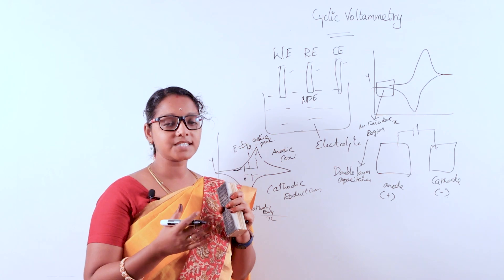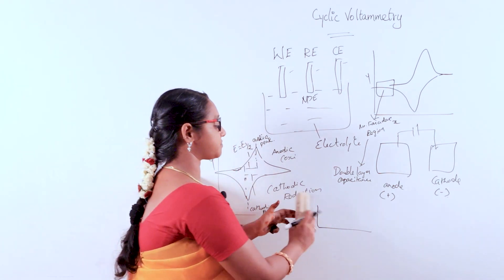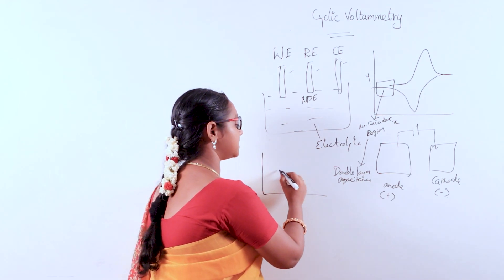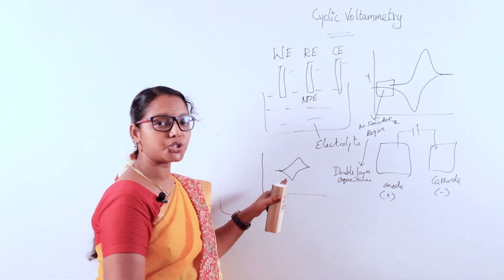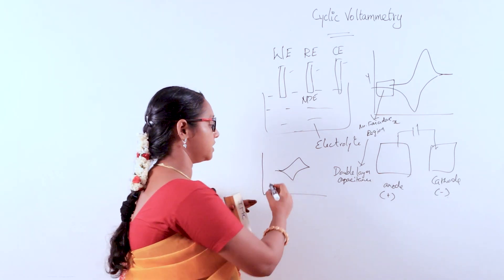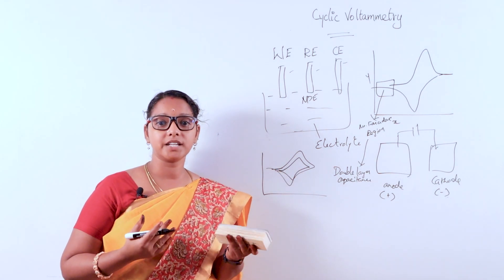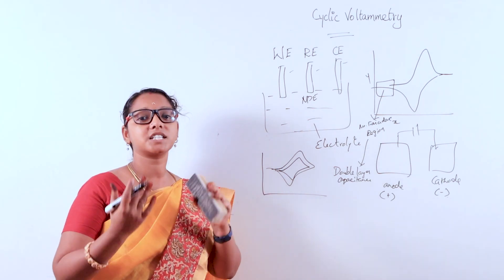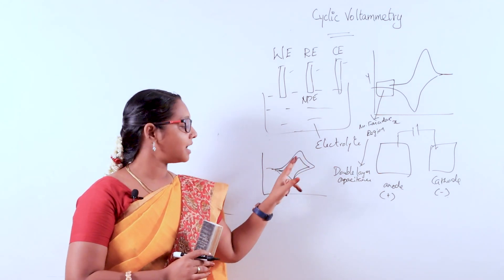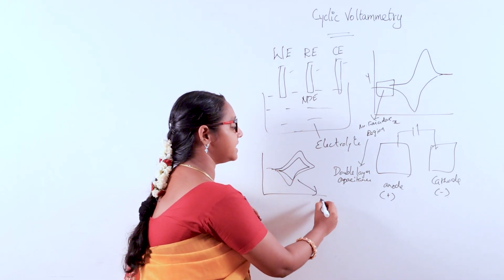Using different scan rates in cyclic voltammetry — for example, 20 millivolts per second, then 50 millivolts per second — the current will increase as the potential increases, since current is directly proportional to applied potential. When the potential decreases, the current also decreases, meaning the non-faradaic region and double layer capacitance also decrease. From this we can calculate the diffusion coefficient.